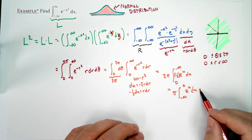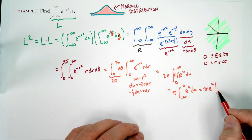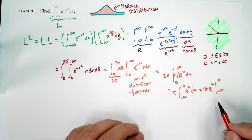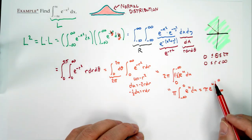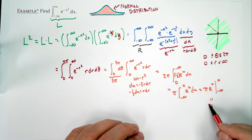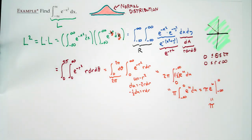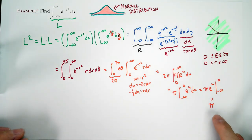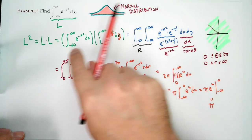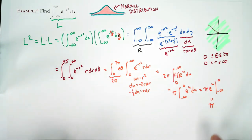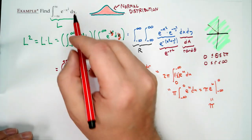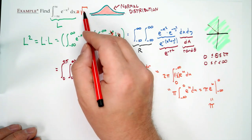Evaluating: π · [e^u]₋∞^0 = π · (e^0 − e^(−∞)) = π · (1 − 0) = π. So L² = π. Therefore our original answer is L = √π. The integral from −∞ to ∞ of e^(−x²) dx equals √π.